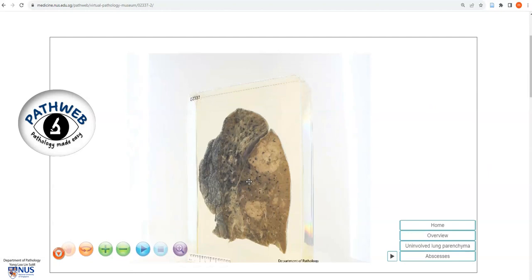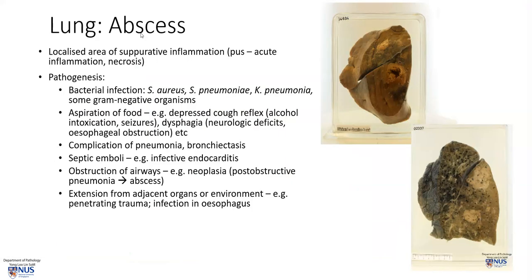Let's take a look at some of the clinical pathologic features of abscess of the lung. An abscess is essentially a localized area of suppurative inflammation, and suppurative inflammation is pus. This is composed of acute inflammatory cells — in other words neutrophils — and necrotic material.